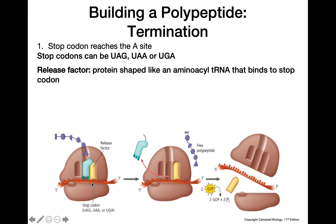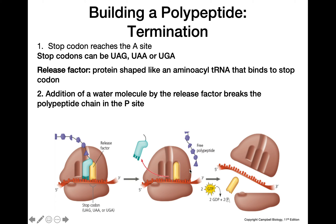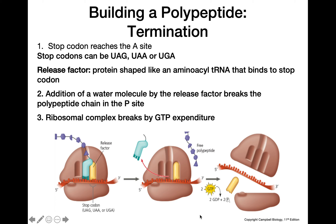After the stop codon is in the A site, a release factor will come in and bind to that codon. The release factor is a protein shaped like a tRNA that binds to the stop codon. Next, a water molecule comes in and releases the polypeptide chain from the tRNA in the P site. The free polypeptide chain is then free to leave the ribosome and go into the cytoplasm. The ribosomal complex then disassembles, with the hydrolysis of GTP providing the energy for this disassembly.